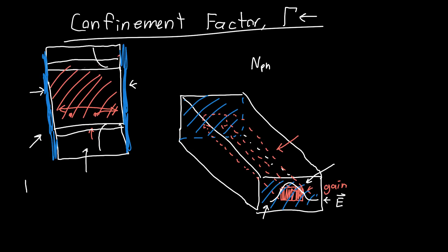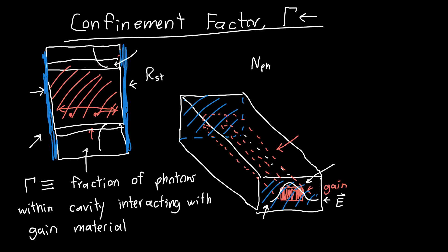And my favorite personal definition of the confinement factor is it's just the fraction of photons within the cavity that can interact with the gain material or interacting with gain material. So not all of our photons are going to be able to produce new photons by stimulated emission, for example, because some of our photons are now residing outside of the cavity. And so gamma is a way of accounting for this.